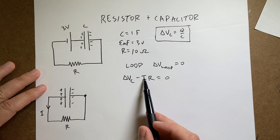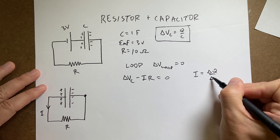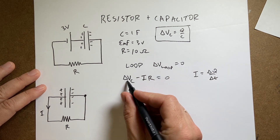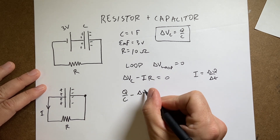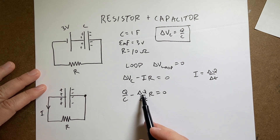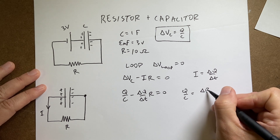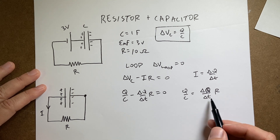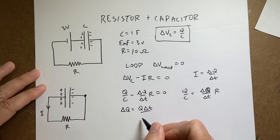Now the current is defined as the rate of change of charge, and the capacitor voltage also depends on charge. So let's put this all in terms of Q. If I write ΔV_C as Q/C and I as ΔQ/ΔT, then solving for ΔQ I get: ΔQ equals Q·ΔT divided by RC.